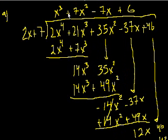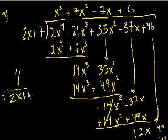So let's see. Our answer is all of this with a remainder of 4. So all of that plus the remainder over what we're using to divide into. 2x plus 7. So our answer, let's see what choice it is. It's x to the third plus 7x squared minus 7x plus 6 plus 4 over 2x plus 7.